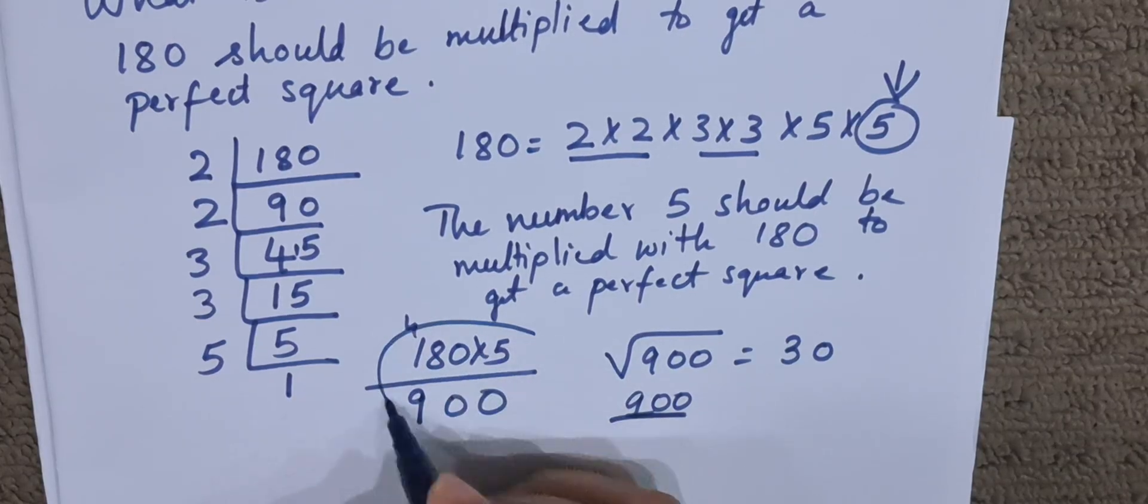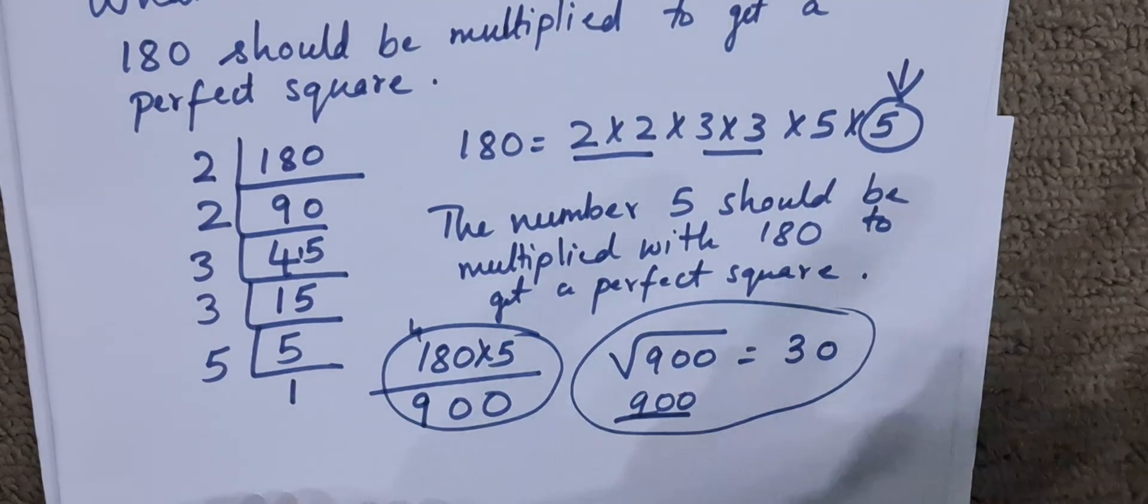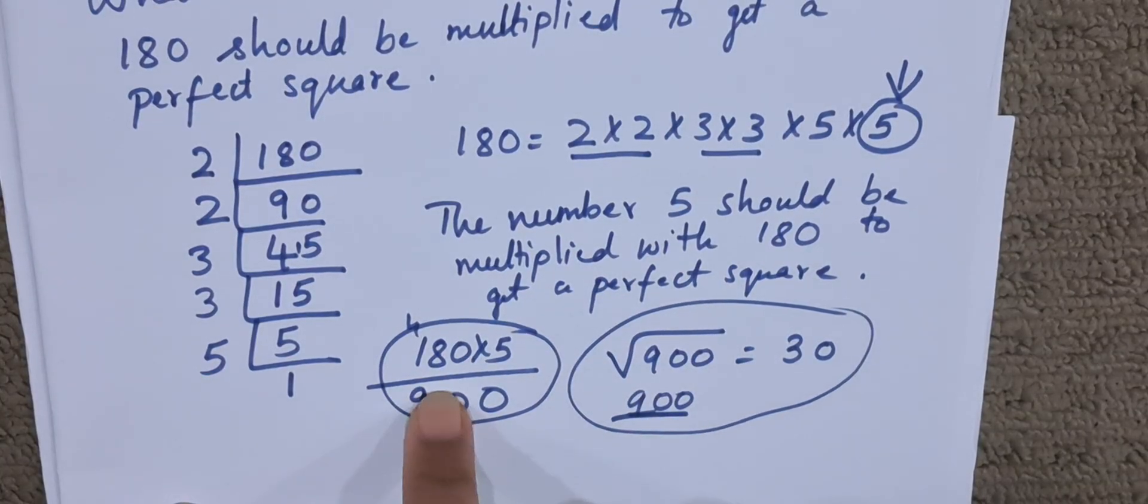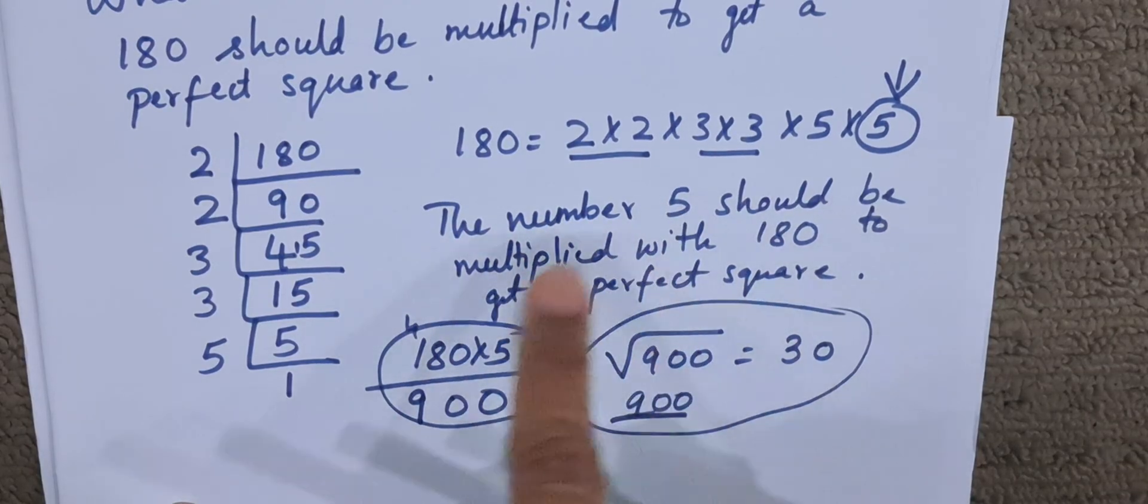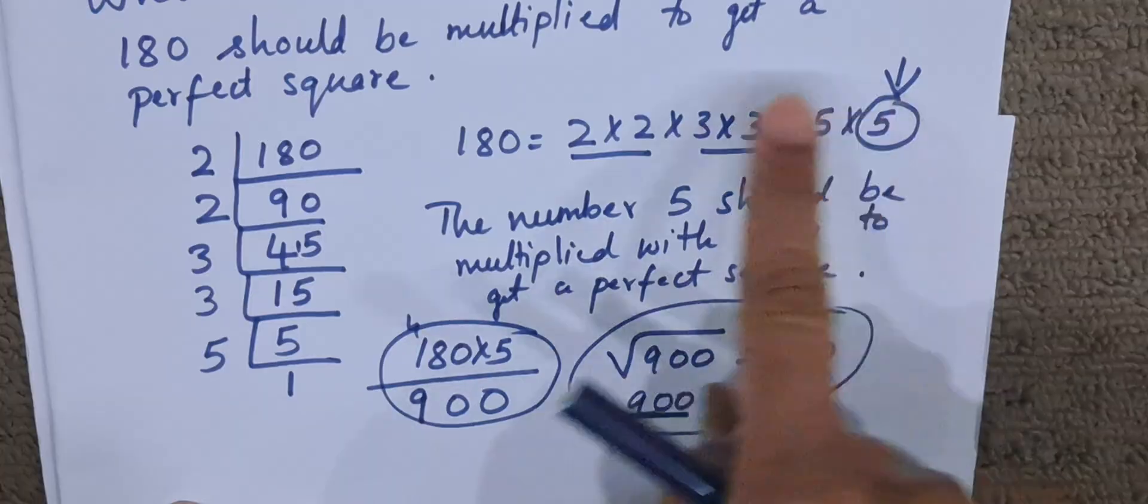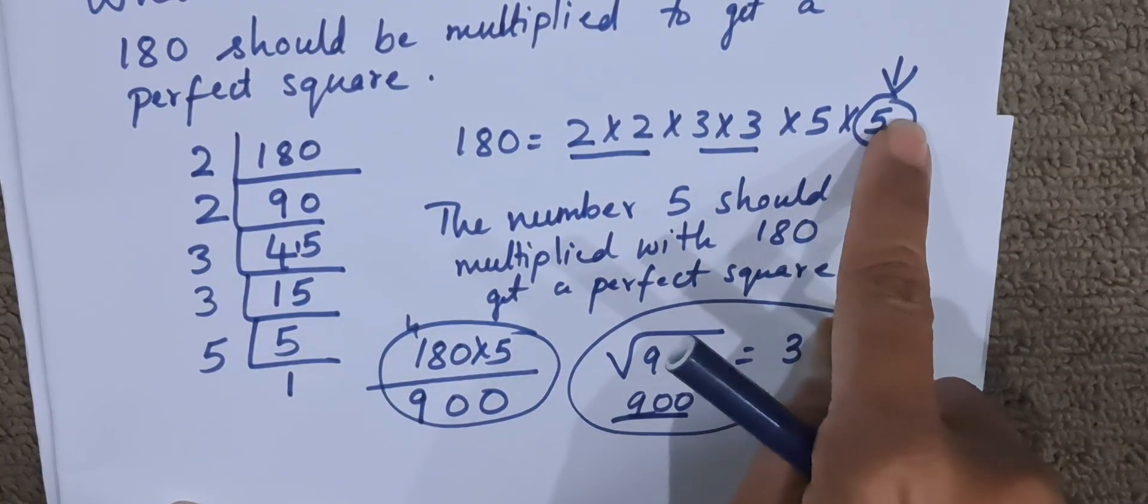All this verification is not needed in the answer sheet. You have to just write down this. I have explained only for your understanding purpose. The answer you have to write down is: the number 5 should be multiplied with 180 to get a perfect square. Do this method, and by detecting which number is less, we will come to know.